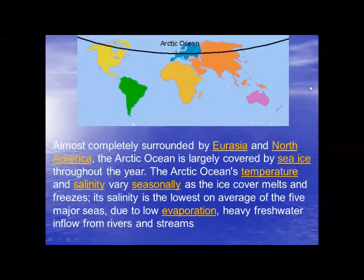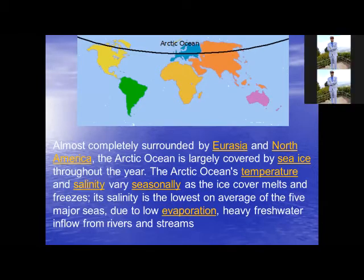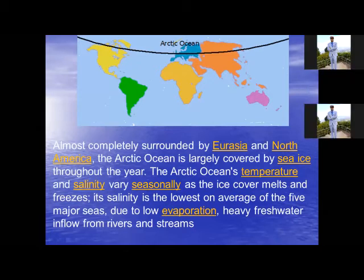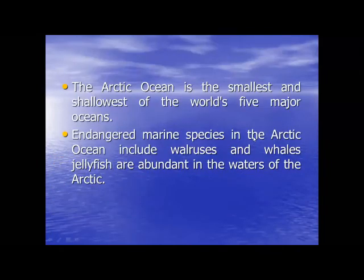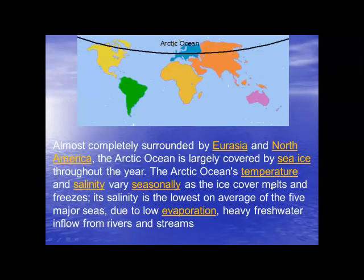The fourth ocean is Arctic Ocean. Arctic Ocean is the smallest ocean and also the shallowest. Salinity and temperature vary seasonally because it is the shallowest ocean. Due to low evaporation rate, it has the lowest salinity among all oceans.